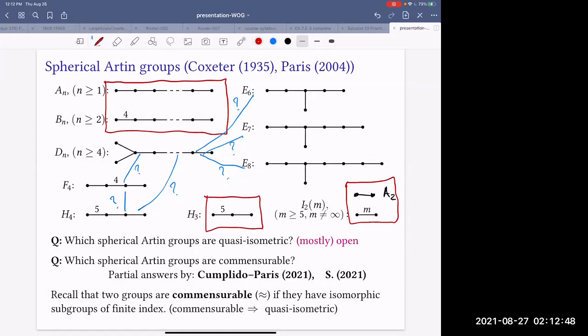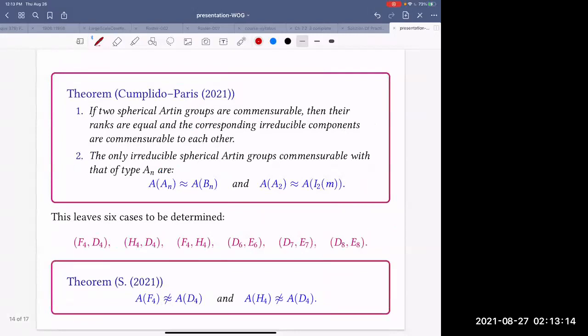These are the cases which are left unresolved by their result. H_3 is its own commensurability class because it cannot be compared with anything else except A_n and B_n and they are not. So six cases remain unresolved in order to obtain full picture. We need to determine for these pairs if they are commensurable or not. My contribution is resolving the first two cases. F_4 and D_4 are commensurable and H_4 and D_4 are not commensurable.